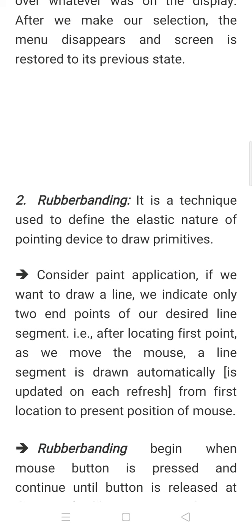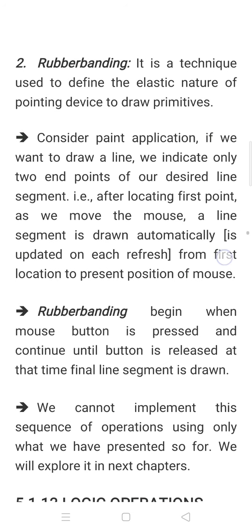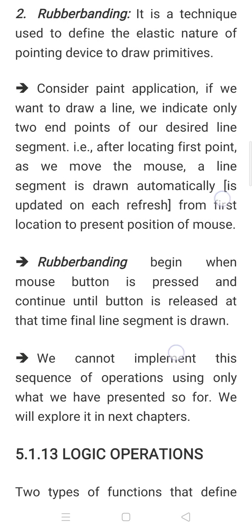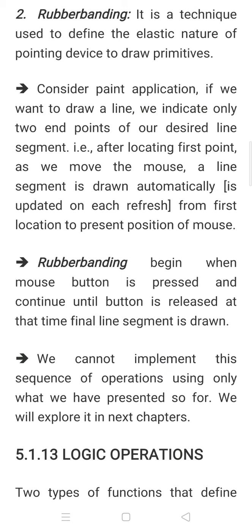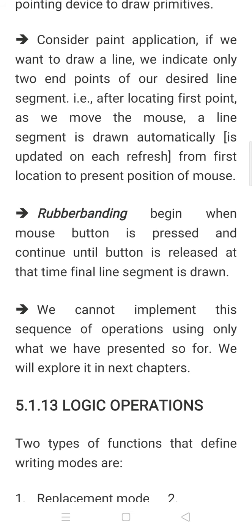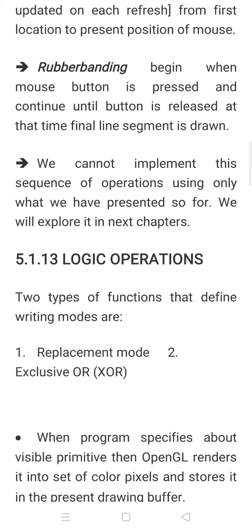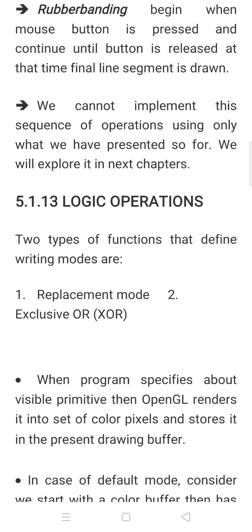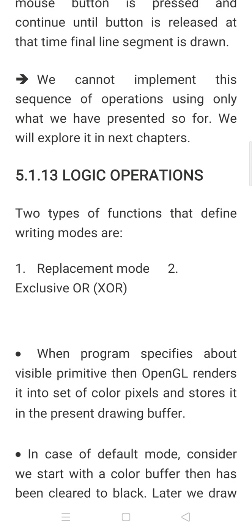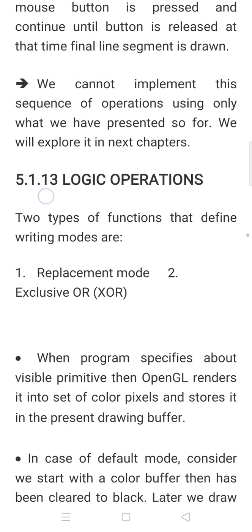Line segments can be easily drawn because we have built-in functions, but curves are difficult. In the next chapters, we will discuss how to implement curves — different kinds and categories of curves. Rubber banding begins when the mouse button is pressed and continues until the mouse button is released, at which time the final line segment is drawn. We cannot implement this sequence of operations using only what we have presented so far. A kind of rubber banding simulation can be done with the help of logic operations, which is the next concept.